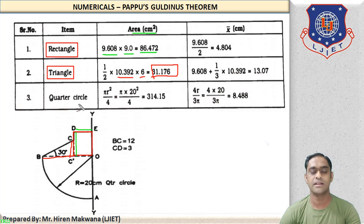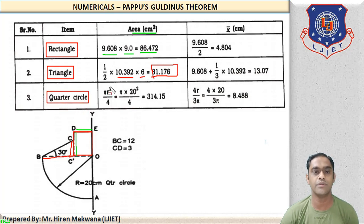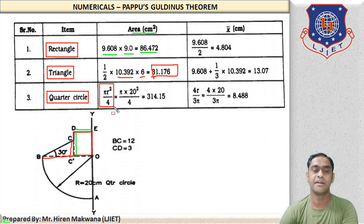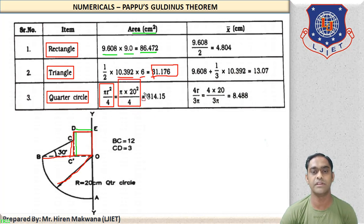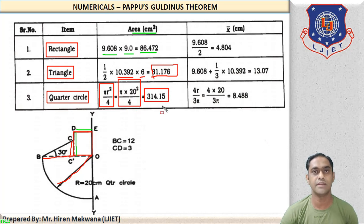For the quarter circle, area = πR²/4, where radius = 20 cm. So area = π × 20² / 4 = 314.15 cm².